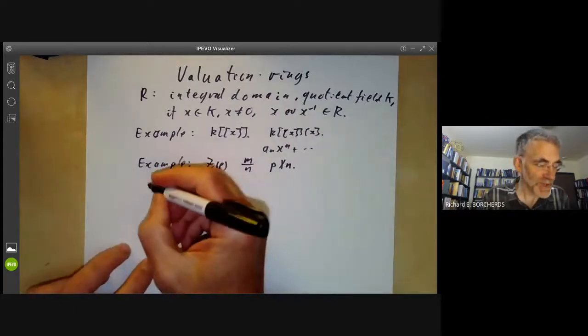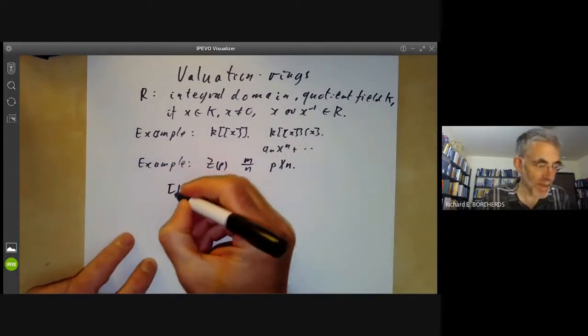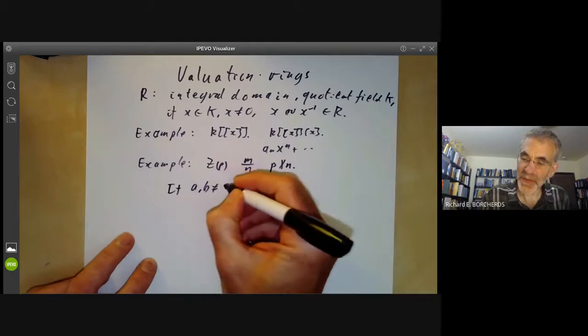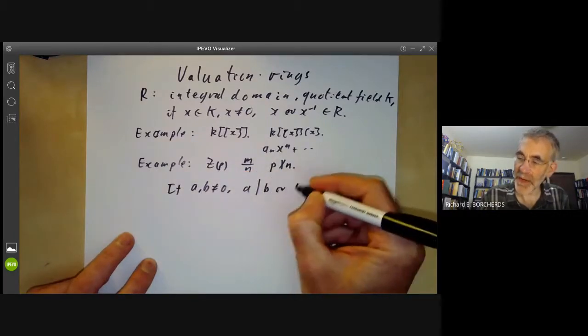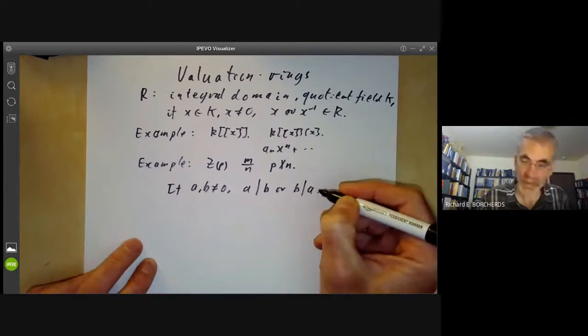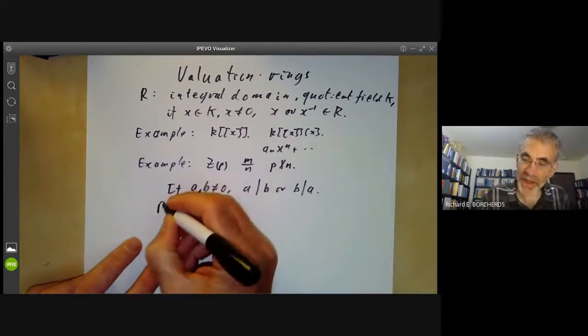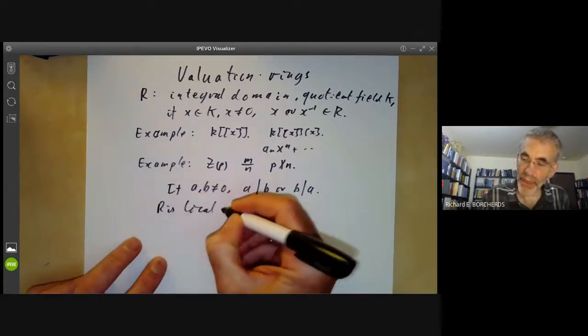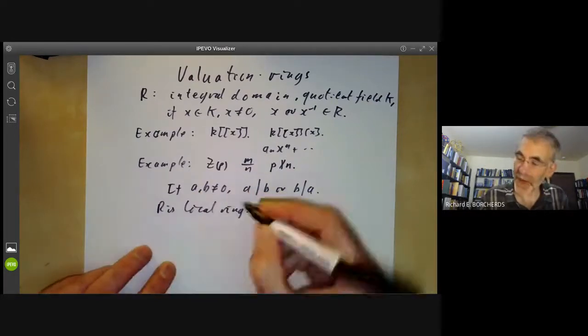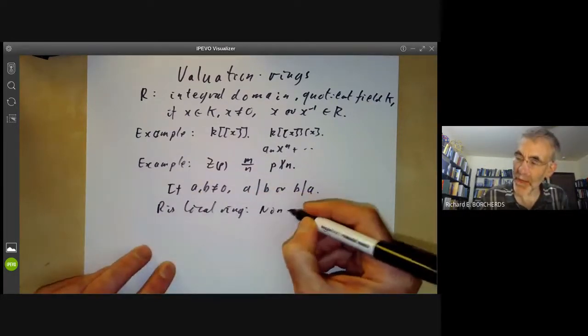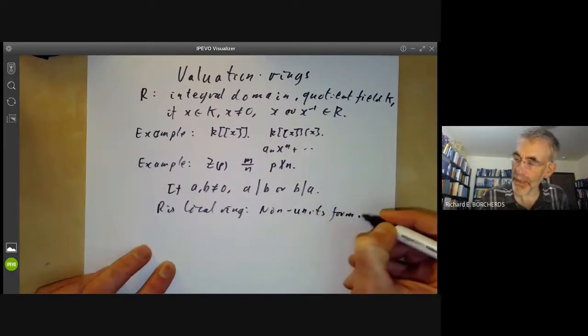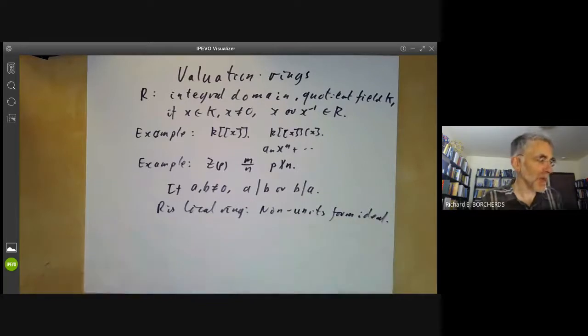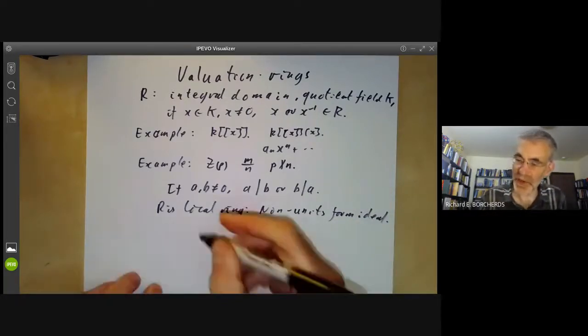Valuation rings have the property that if A and B are not equal to zero, then A divides B or B divides A. In particular, R is a local ring, meaning the non-units form an ideal. You have to think for a second to see that the sum of two non-units is a non-unit.